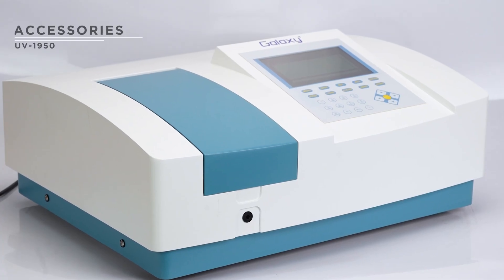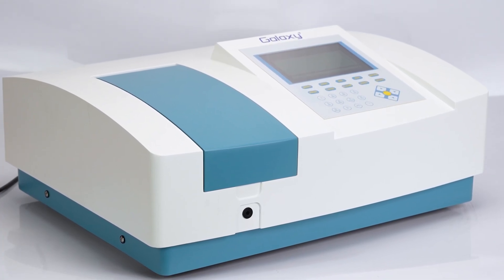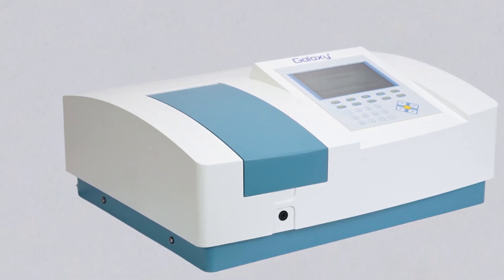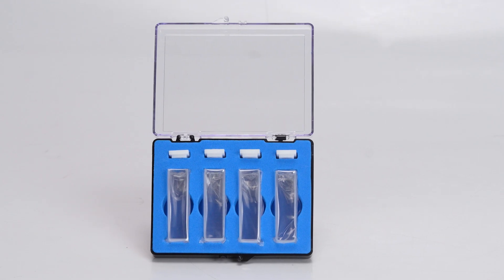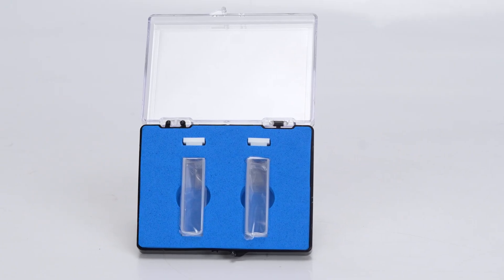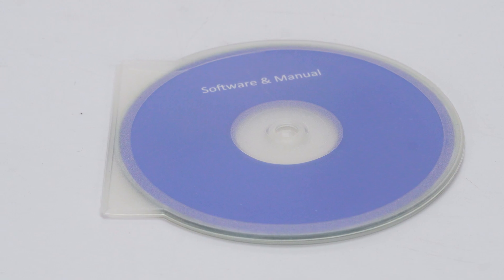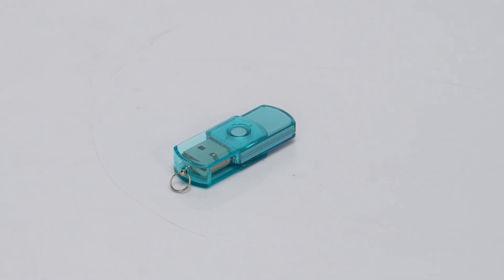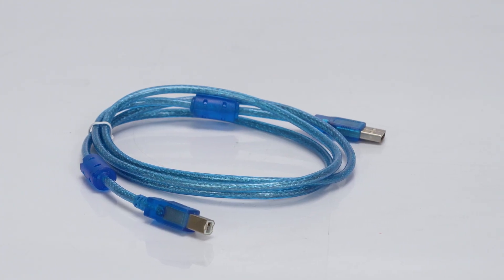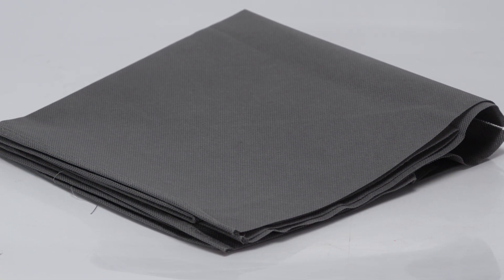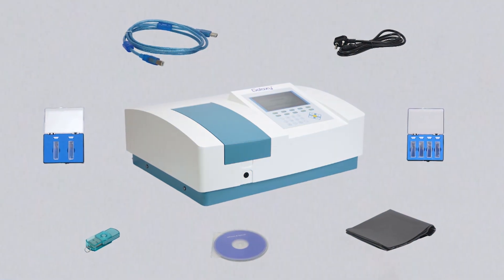When you unbox the UV1950, you'll find the following accessories: the main unit, power cable, four glass cuvettes, two quartz cuvettes, a compact disc with software, a dongle key, a connecting cable, and a protective cover. Ensure all components are present before starting.